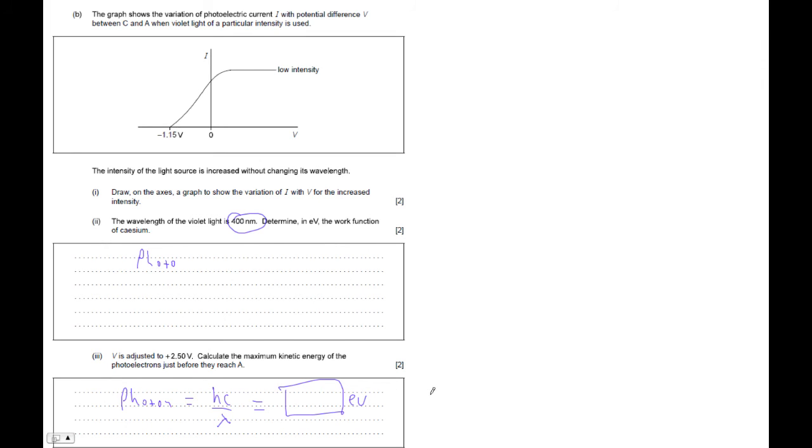Figure that out. And then you're just going to say, whatever that photon energy is, minus the work, which is what you figured out here. And that answer is the work function is between 1 and 2 electron volts.